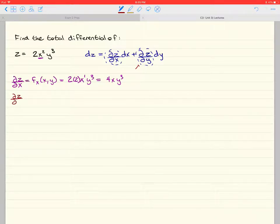Del z over del y is equal to the functional notation, f of y at xy, focusing on the y here, taking the derivative of the y, keeping everything else constant we find 3 times 2, x squared comes along for the ride, y is reduced to a square, equals 6x squared y squared.